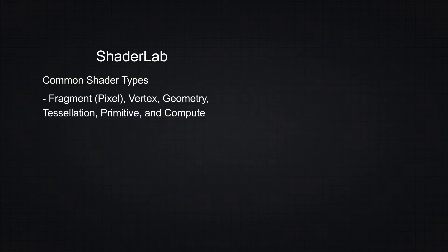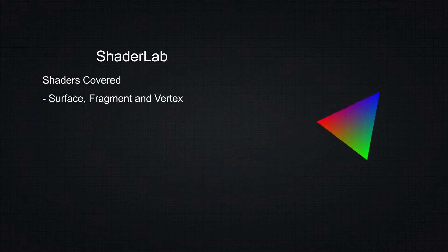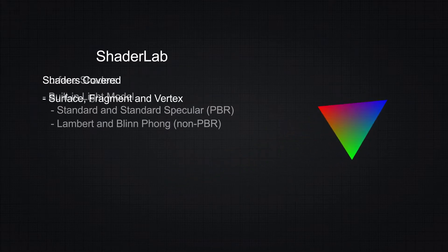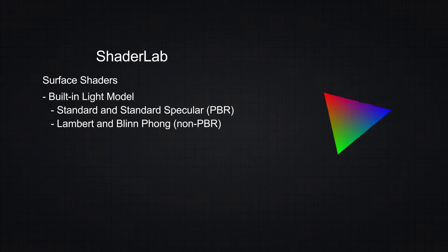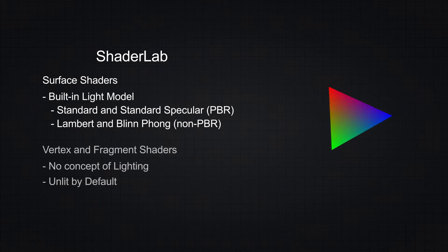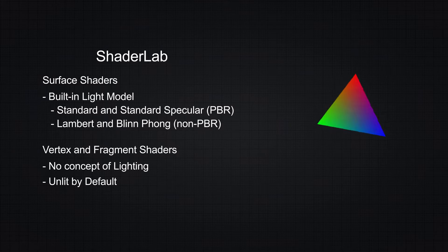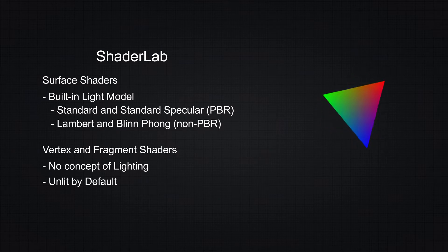Despite there being other types of shaders, we'll be focusing on the most commonly used ones, which are surface shaders and fragment and vertex shaders. Unlike surface shaders, vertex and fragment shaders have no built-in concept of how light should behave, so they aren't lit by default. They are particularly useful for shaders that are complex or require custom lighting or the use of special techniques unavailable with surface shaders.